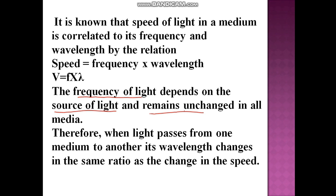Therefore, when light passes from one medium to another, its wavelength changes in the same ratio as the change in the speed. This comes from the relationship v = f λ. Since frequency does not change because it comes from a particular source, and since there is a change in velocity when light enters from one medium to another, the wavelength is also going to change.